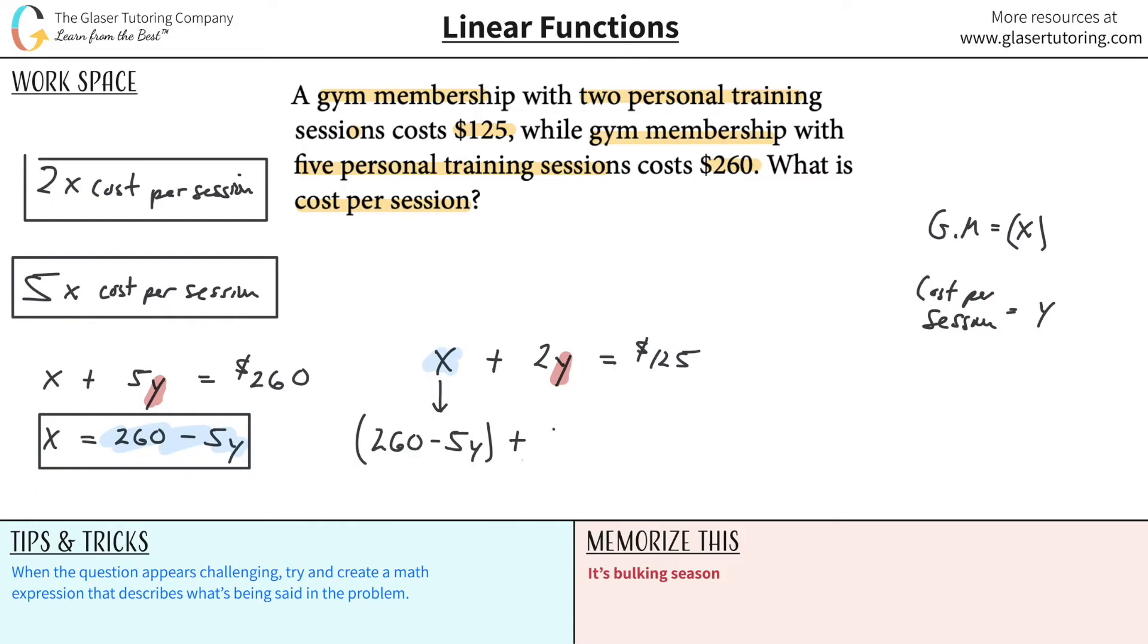Plus now, 2Y is equal to 125. Now notice, one equation with only one unknown. This is great because we can solve this. I don't really need the parentheses here. So I'm just going to get rid of them. And now, let's solve for Y. Combine your like terms here. So it's going to be 260 minus now 3Y is equal to 125.